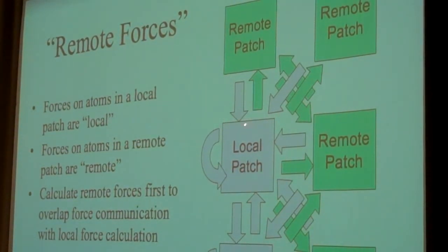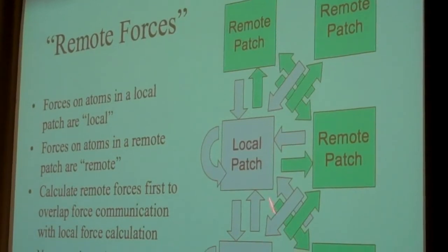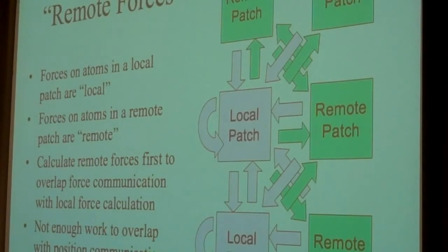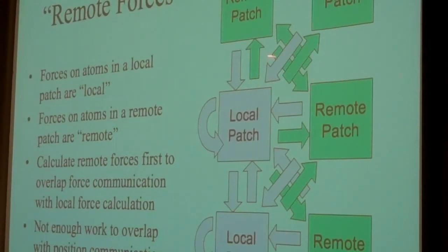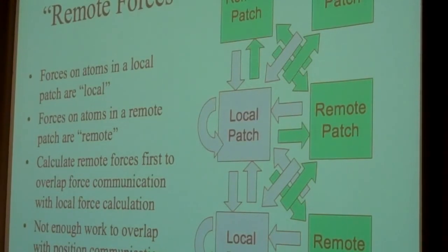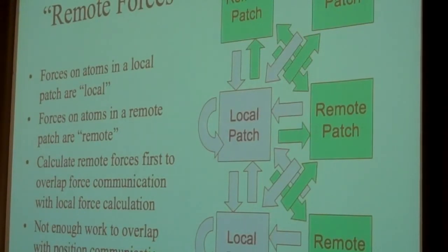So when I say remote forces, we can imagine we've got these patches are on a local processor. The green patches are on a remote processor. We said we weren't using Newton's second law. So each block in a kernel calculates forces on one patch due to another patch. So these arrows each represent a block in the GPU calculation. When I say remote forces, the green arrows are what would be calculated because they're pointing at a remote patch, whereas the local forces are calculated because they're pointing at a local patch. If we were using Newton's second law, the only local interactions would be these four between the two local patches or the local patches themselves. By using one-sided calculation, we get a larger amount of local work that can be delayed until after we transmit forces to remote patches.